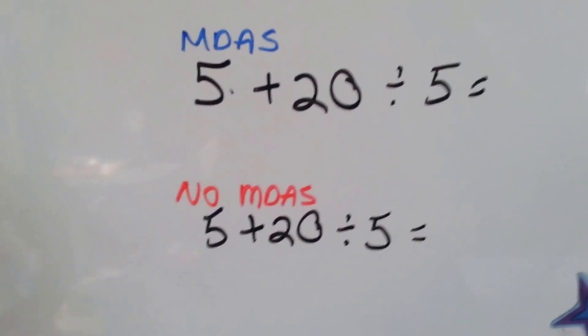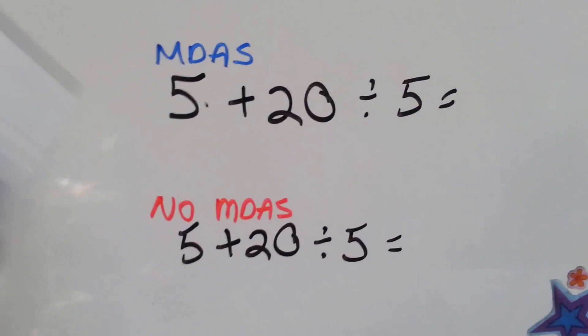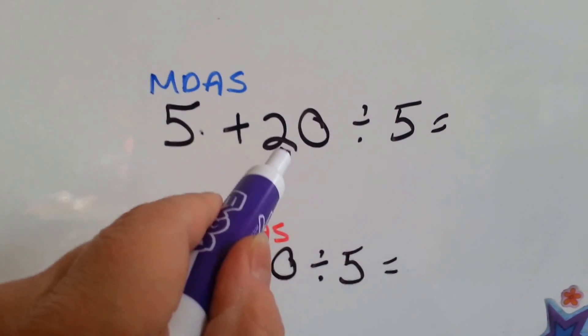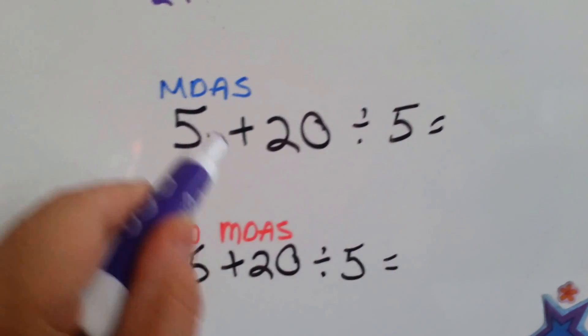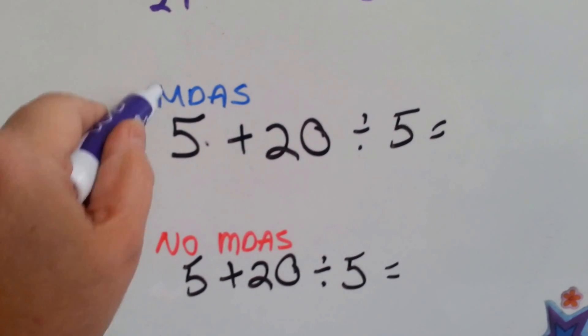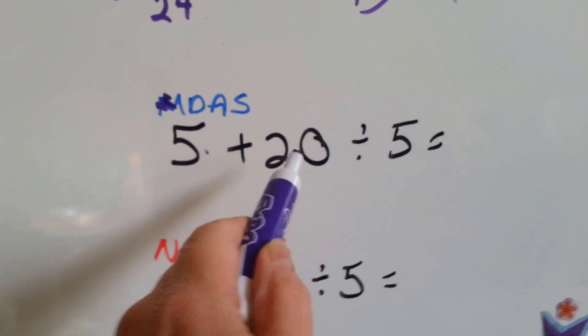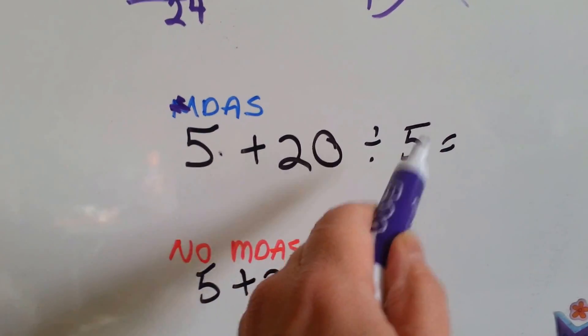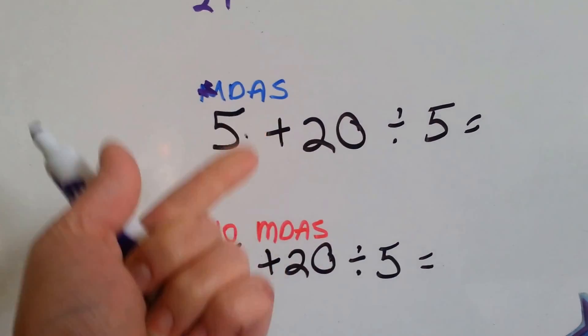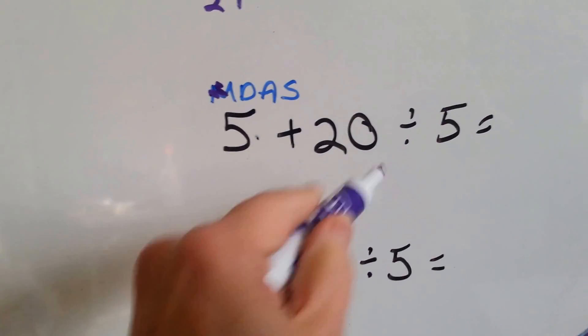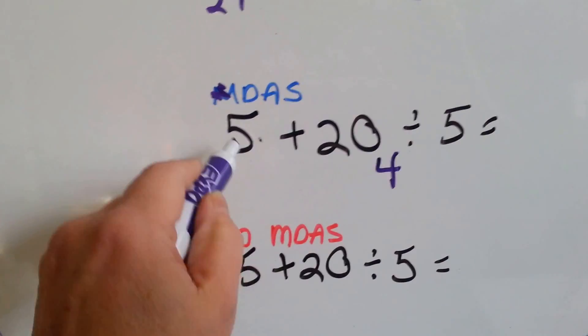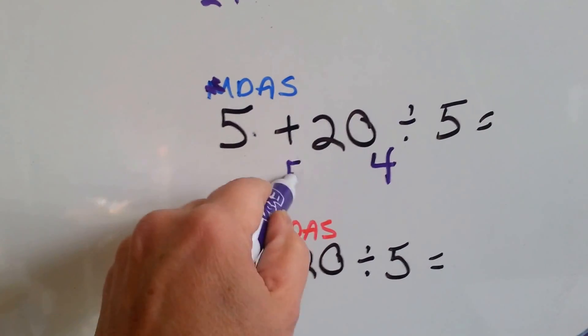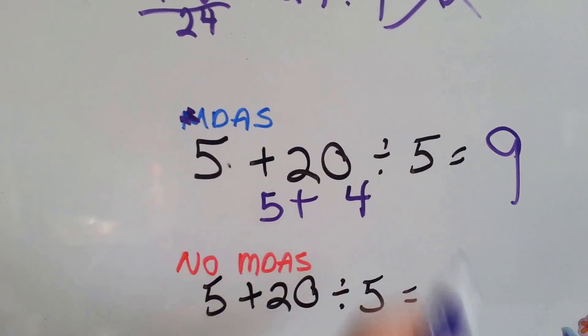Here's the last one we're going to show you, and then I'll show you the 5th grade one. We've got 5 plus 20 divided by 5. There's no multiplication. So, we're going to go right to division. 20 divided by 5. How many 5s are in 20? 5, 10, 15, 20. 4. Now, we're going to do the addition. 5 plus 4 is 9.